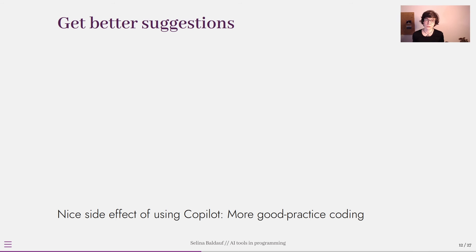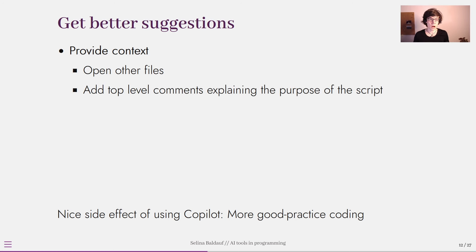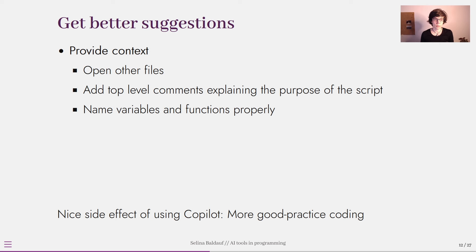GitHub Copilot here helped us quickly make a really nice plot that otherwise would have taken a lot more time to create. For me, these inline suggestions were already a game changer, and with a few tricks you can boost the quality of suggestions even further. My first general tip is to always provide context — the more context GitHub Copilot has, the better the suggestions will be. This can mean opening other files in your IDE, because GitHub Copilot looks at all the files open in different tabs.